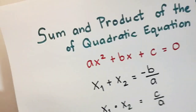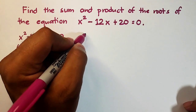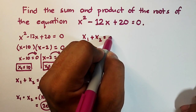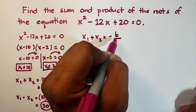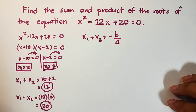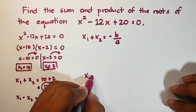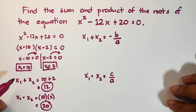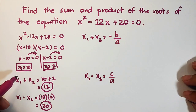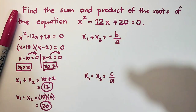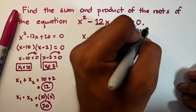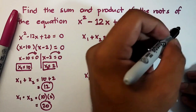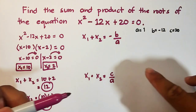For the next method, we will use the formula. The formula for getting the sum is x sub 1 plus x sub 2 equals negative b over a. For the product, x sub 1 times x sub 2 equals c over a. In these formulas, we need to identify the values of a, b, and c. In this problem, a is equal to 1, b is negative 12, and c is 20.